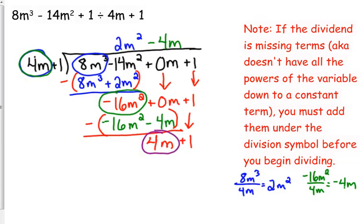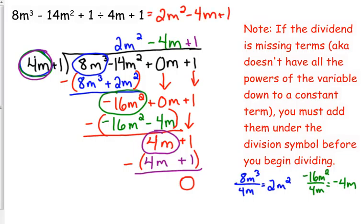Bring down the 1. Last step, divide 4m by 4m. That is, of course, 1. Then multiply. 1 times 4m is 4m. 1 times 1 is 1. When we subtract, we get 0. So, our answer to that division problem is 2m squared minus 4m plus 1. That is our quotient.